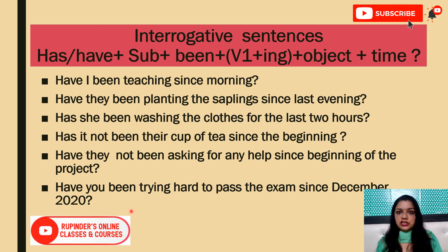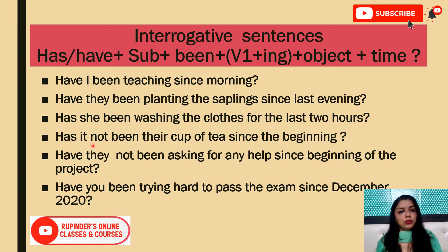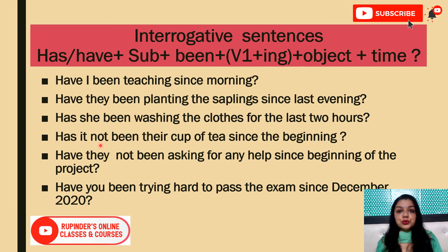All these are interrogative sentences. 'Not' may or may not be present in interrogative sentences — that's why mixed examples have been given. The formula stays the same. If there is any confusion about where to place 'not', it always comes at position three. Now let's look at sentences where no action verb is used — how to use 'has been' or 'have been' without a verb.